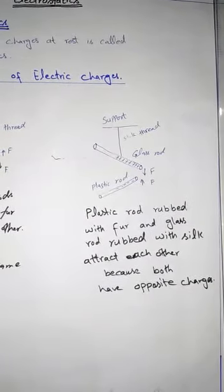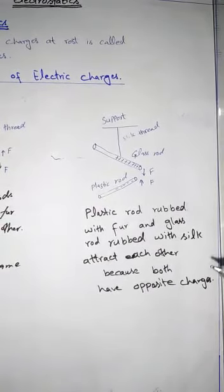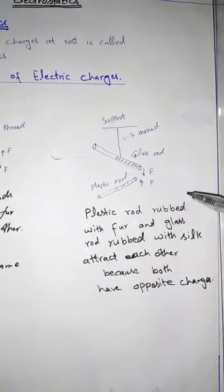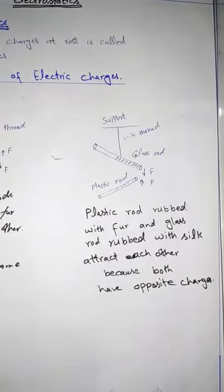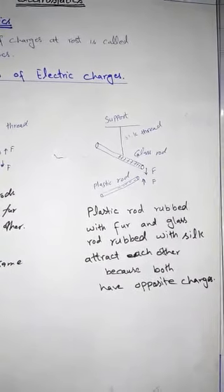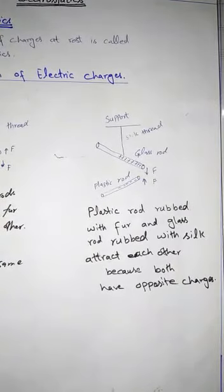In the first case, both were the same rod and we rubbed them with the same thing, so properties were similar. When we did it in a different way, different properties appeared. These are conventionally called positive charges and negative charges. During the process of rubbing, negative charges transfer from one object to another.